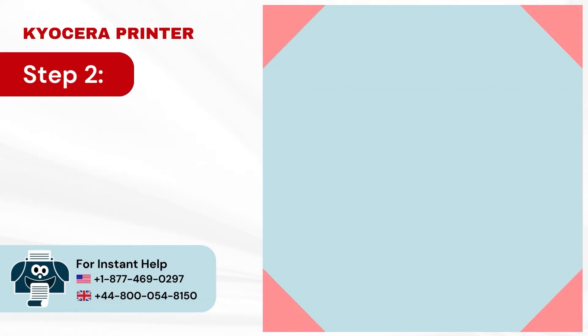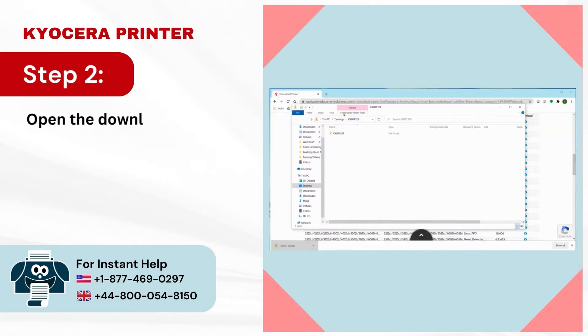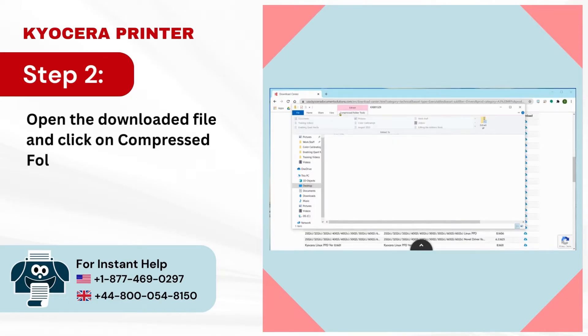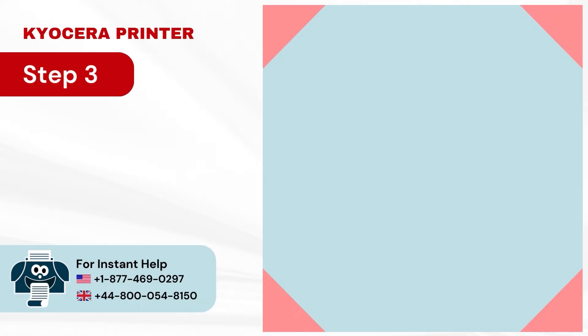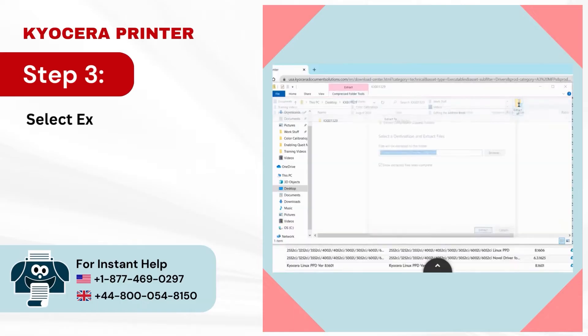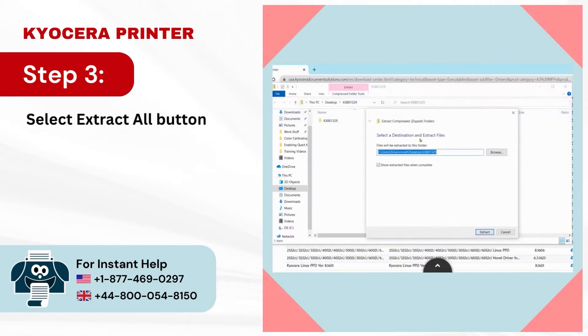Step 2: Open the downloaded file and click on Compressed Folder Tools under Extract. Step 3: Select the Extract All button, then click on Extract in the new window.